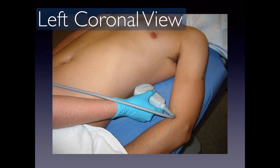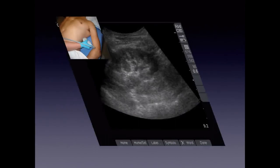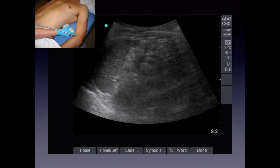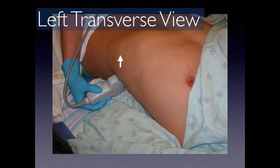On the left side, the technique is very similar. The indicator is towards the patient's head for the coronal view, and the probe is slightly oblique to get the most longitudinal view of the kidney. On this side you see the spleen rather than the liver. For the transverse view, the indicator is up towards the ceiling.